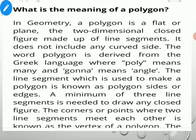A polygon is a flat or plane figure — a two-dimensional closed figure made up of line segments. In simple terms, a polygon is a simple closed curve made up entirely of line segments. It is a closed figure that does not intersect itself at any point and does not include any curved sides. The word polygon is derived from the Greek language, where 'poly' means many and 'gon' means angle.